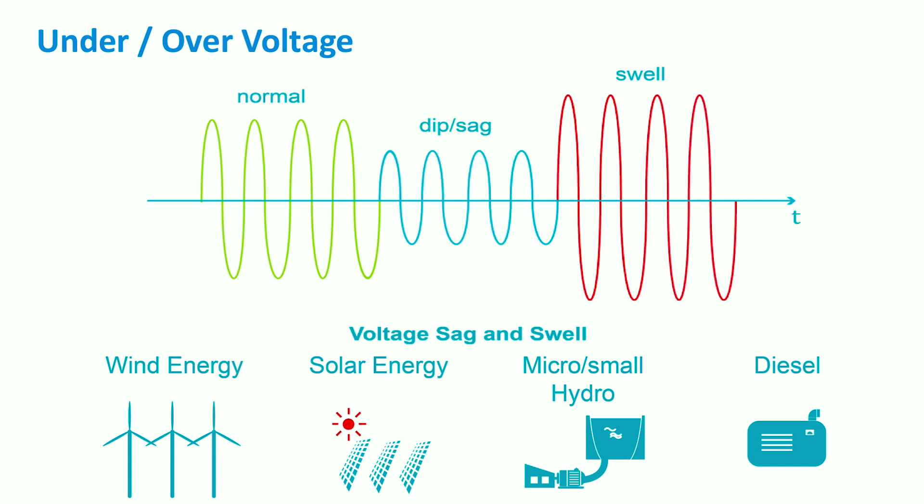On the other hand, the voltage increases when the load across the feeder is light or the generated power by DGs has a high value. This problem is called voltage swell.